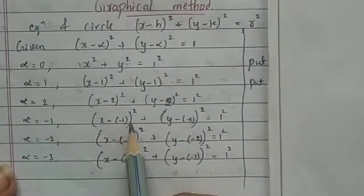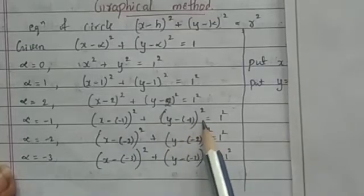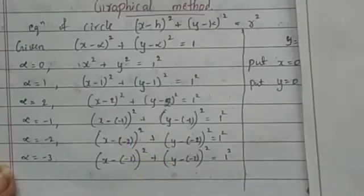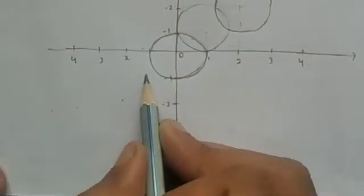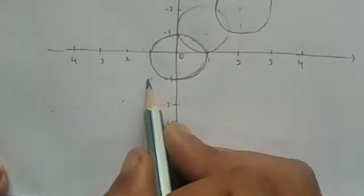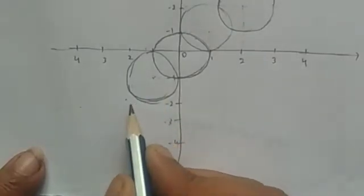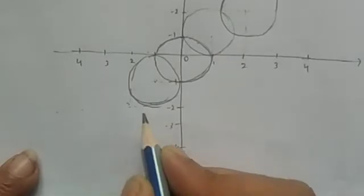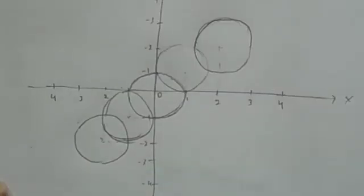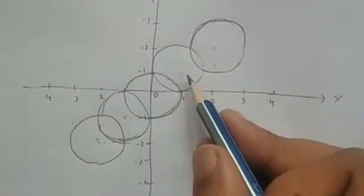For α = −1, the equation becomes (x+1)² + (y+1)² = 1, with center (−1, −1). Similarly for α = −2, −3, −4, the centers shift accordingly. These form a family of circles along the line y = x.